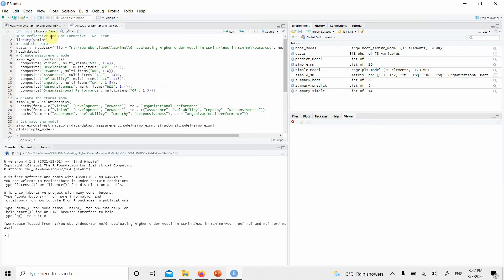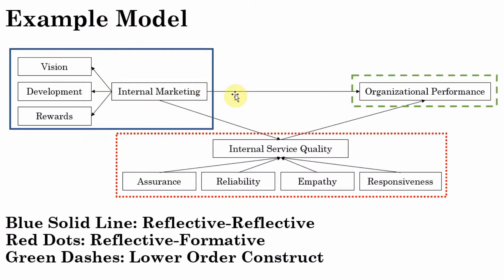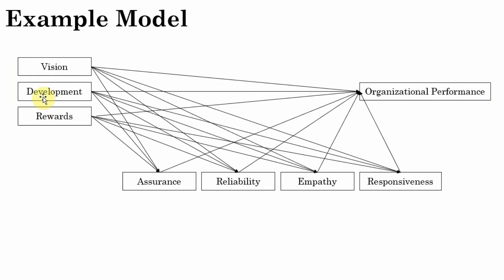Let's move to RStudio. Here are all lower-order constructs for the reflective-reflective and reflective-formative model. The model I'm testing has internal marketing as higher-order, internal service quality as higher-order, and organizational performance as just lower-order. The blue solid line reflects the reflective-reflective higher-order construct, the red dotted line reflects the reflective-formative higher-order construct. We will first assess all lower-order constructs for reliability and validity.